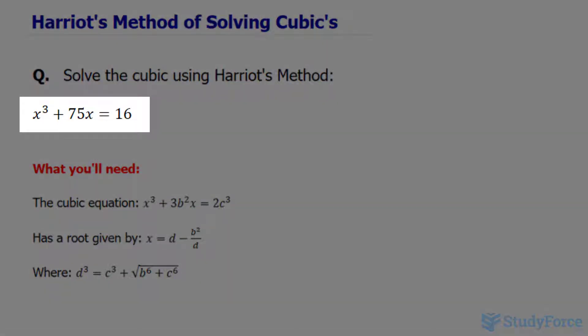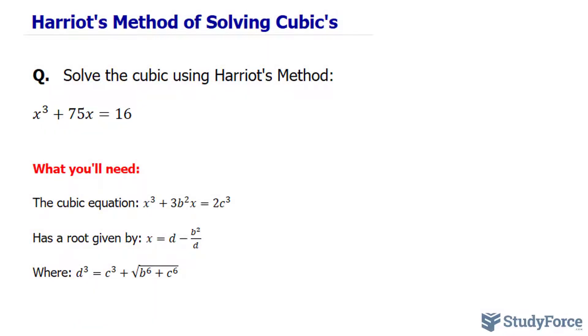So, pretend that you have a cubic equation like this where we have x³ + 75x = 16. Just a random cubic but something that's very special about it is that it does not contain the x² term. This method cannot be applied to cubics that have the x² term. So we have the x³ term, we have the x term and we have a constant.